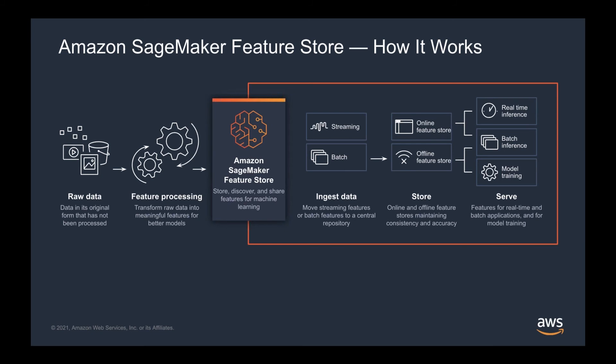A recent addition to SageMaker is the feature store. Feature store needs some investment but brings major benefits. Feature definitions are standardized and easily discovered — machine learning engineers working on different tasks don't have to implement the same feature from scratch without knowing it already exists. In your pipelines, you don't have to repeat the feature extraction step every time. SageMaker feature store supports two types of features: online features for real-time predictions, stored in a high-throughput, low-latency store, and offline features for batch processes like training, stored in a high-throughput, high-bandwidth store.